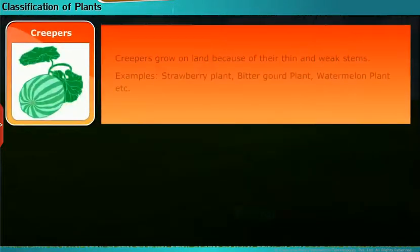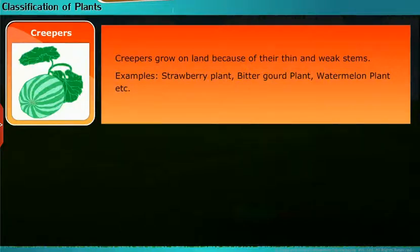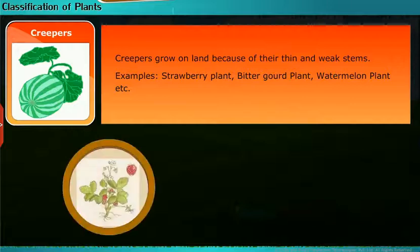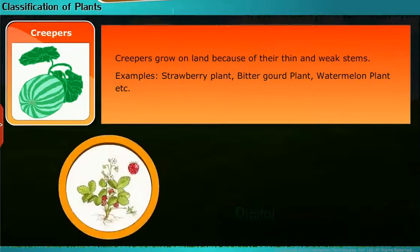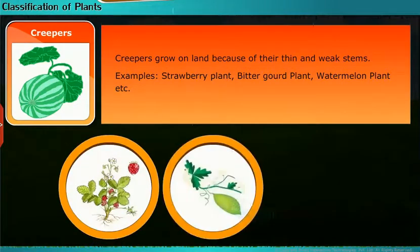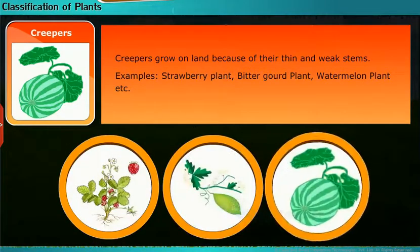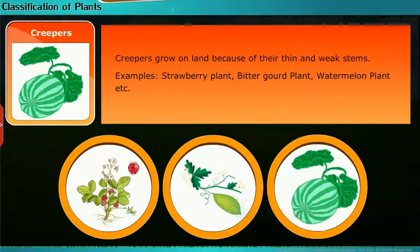Creepers grow on land because of their thin and weak stems. Examples include strawberry plant, bitter gourd plant, and watermelon plant.